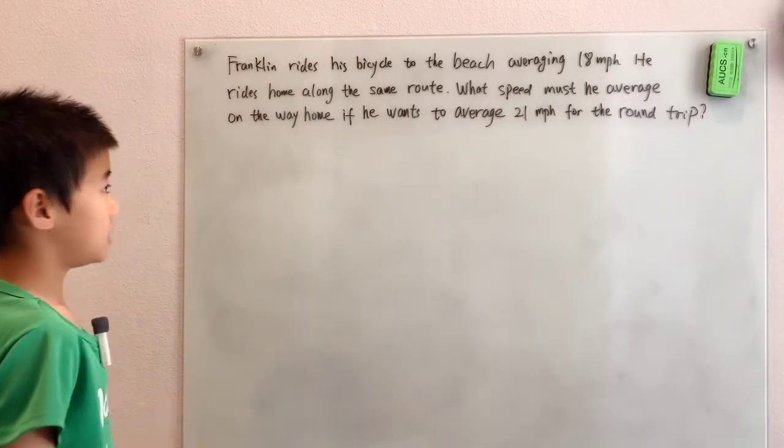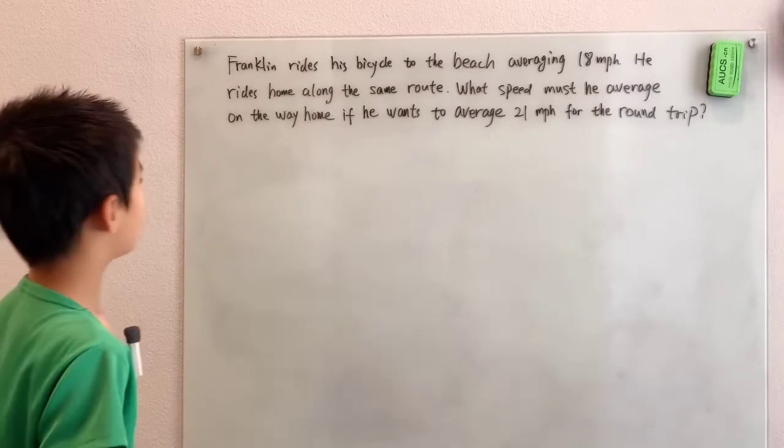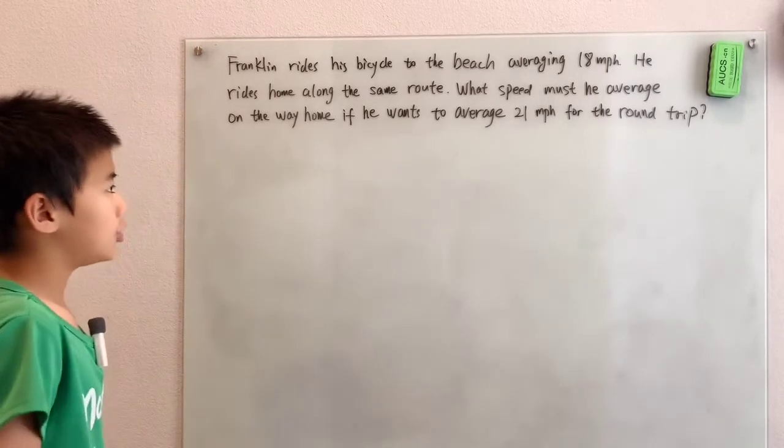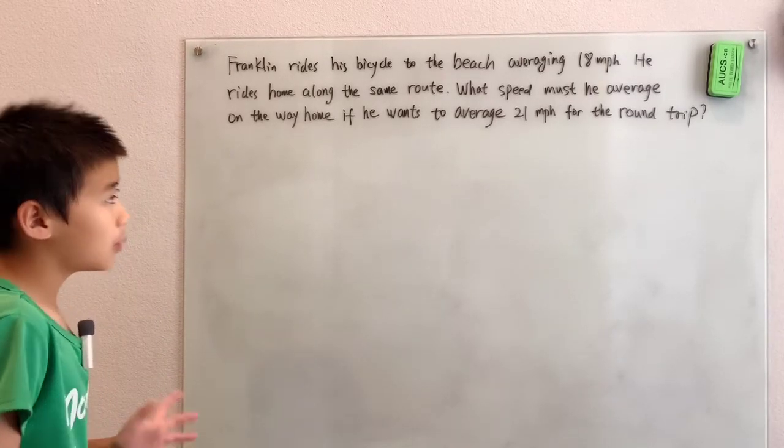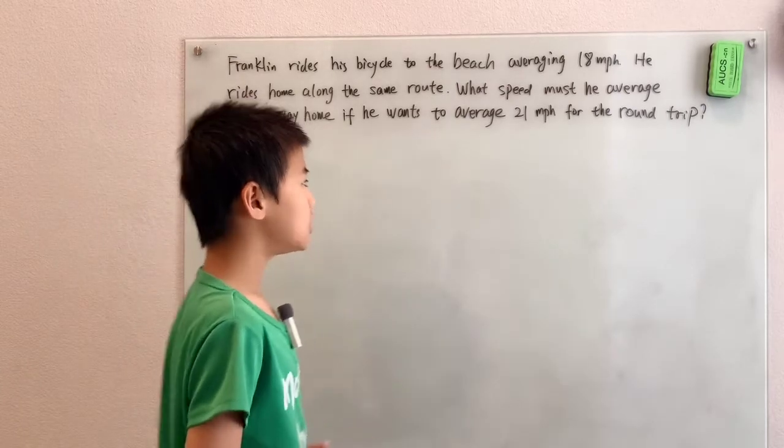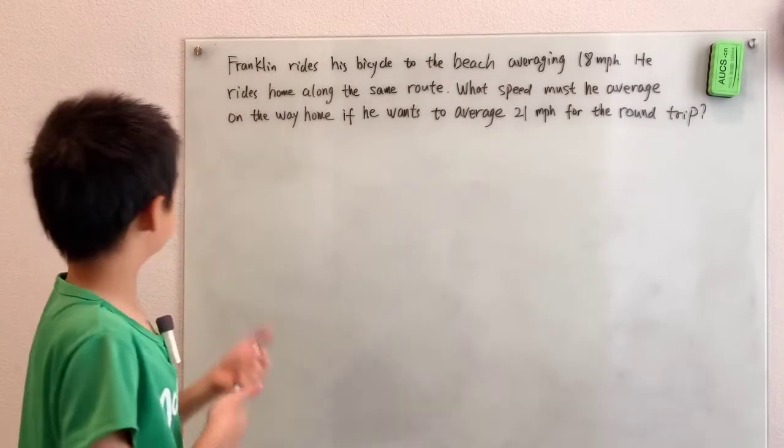Franklin rides his bicycle to the beach averaging 18 miles per hour. He rides home along the same route. What speed must he average on the way home if he wants to average 21 miles per hour for the whole round trip?